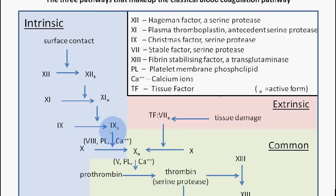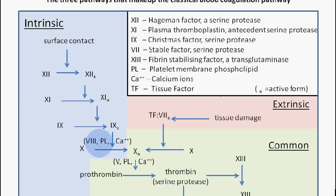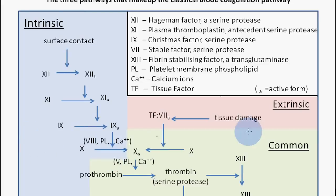Factor 11a allows the conversion of factor 9 into factor 9a. Factor 9a then enables factor 10 to be converted into factor 10a, but this process also requires factor 8, a platelet membrane phospholipid, and calcium ions in order for factor 10 to be converted into factor 10a. Once we've reached that point, that's the intrinsic pathway done.